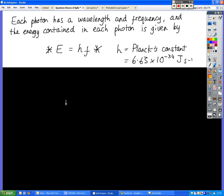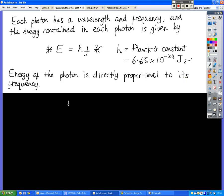So that leads us to this E equals HF. So each photon has its own wavelength and frequency just like a wave would. It has the same wavelength and frequency that the corresponding wave would. But the energy that each photon has is given by E equals HF. So that basically tells you that the amount of energy that a photon has is directly proportional to its frequency.